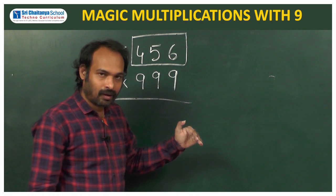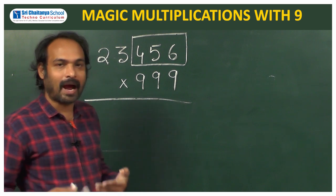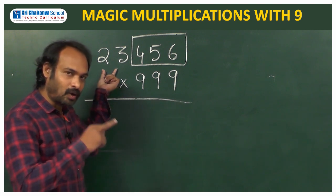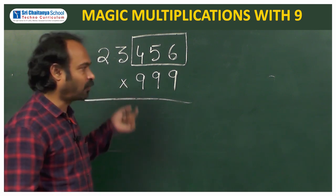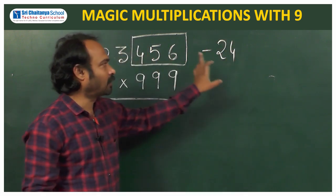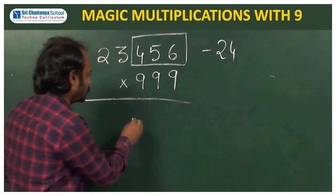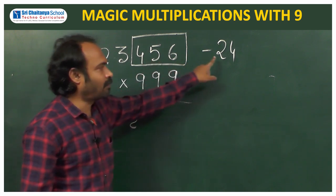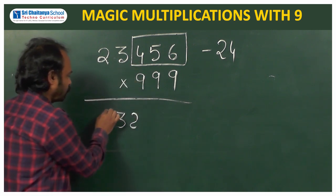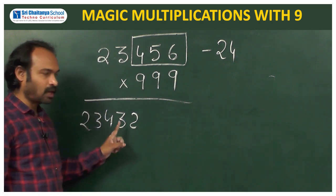Now, what is the second step? Add 1 to unblocked digits. When you add 1 to unblocked digits, what is the result you will get? The unblocked part is 23, and when you add 1 to this, the value is 24. So, minus 24 — from this number we have to deduct 24. So, 6 minus 4 is 2. 5 minus 2 is 3. Then we get 4, 2, 3, 4, 3, 2.